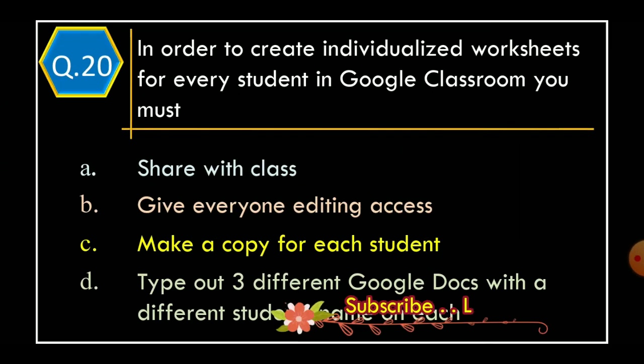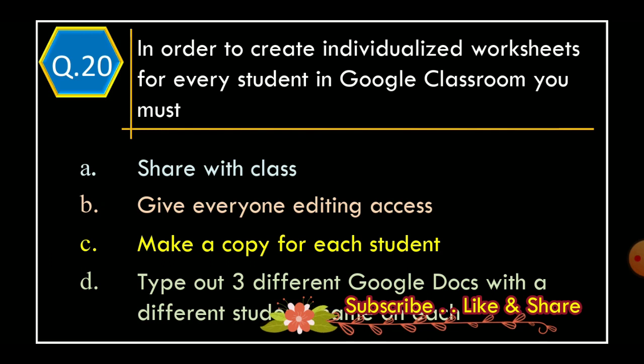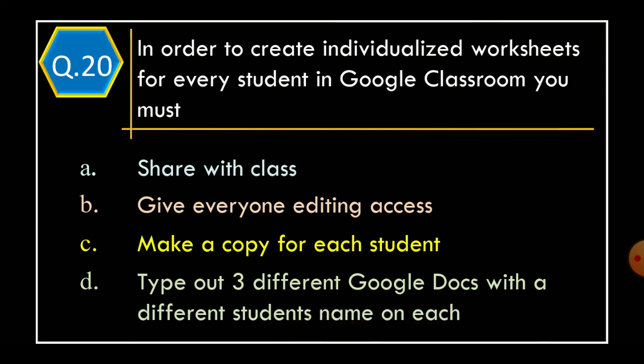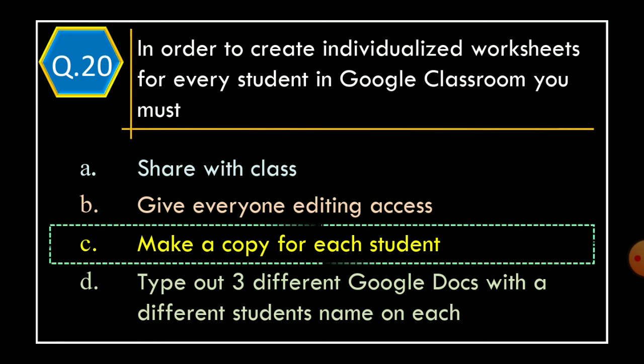Question 20: In order to create individualized worksheets for every student in Google Classroom, you must — Option A: Share with Class, Option B: Give everyone editing access, Option C: Make a copy for each student, Option D: Type out three different Google Docs with the different student's name on each. And correct option is Option C: Make a copy for each student.